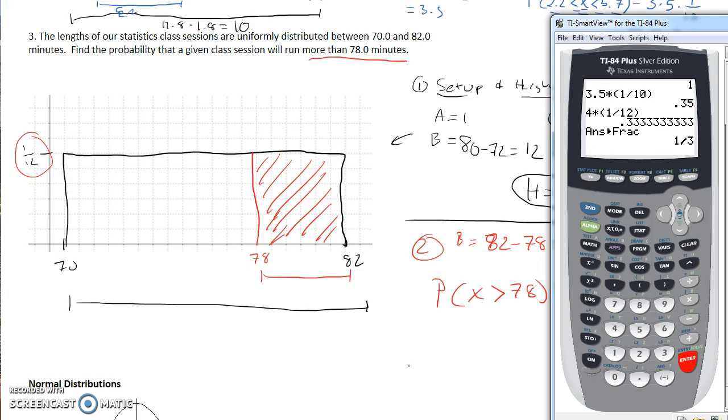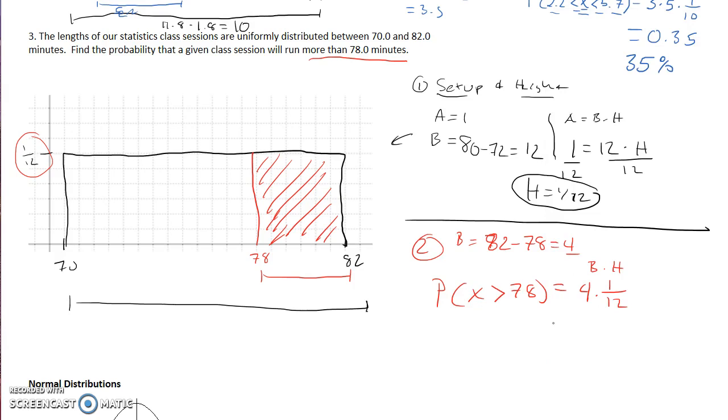So the probability that a class run period will run more than 78 minutes is 1 third, or 0.33 repeating, or 33.33 repeating percent, right? Remember probabilities can be written in all three of these formats and we should be comfortable listing them in any of those formats.